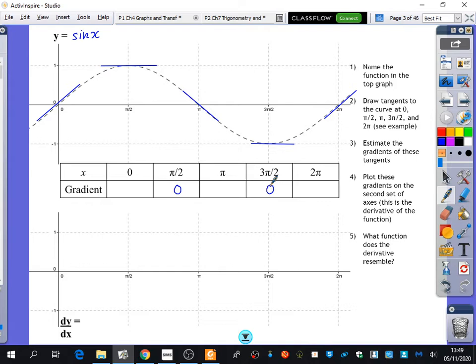What do you think the gradient is at zero? The gradient is one because this is a sine graph and we know for small angles that sine x is approximately equal to x and the gradient of x is one. So the gradient at this point is one, the gradient at 2π is also one, and the gradient at π is minus one.